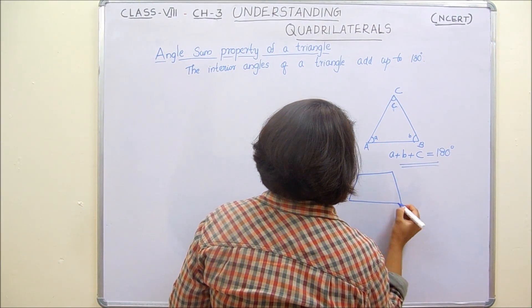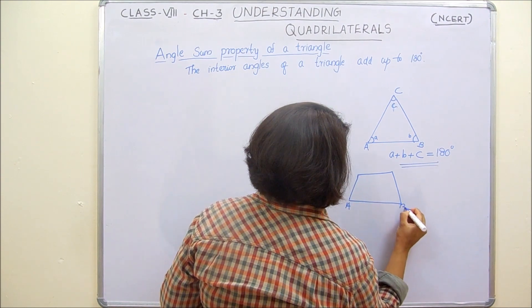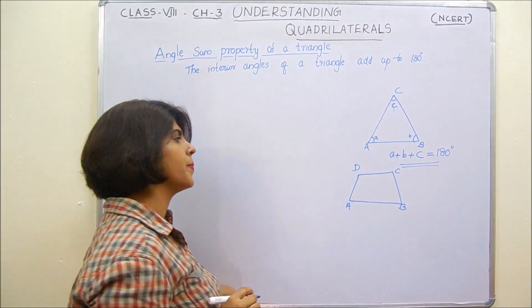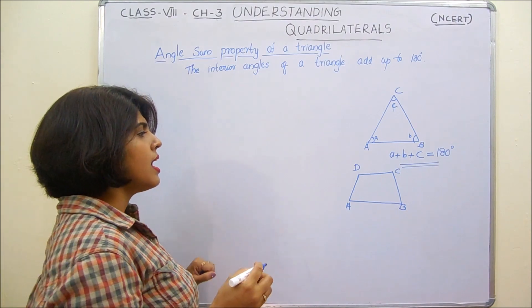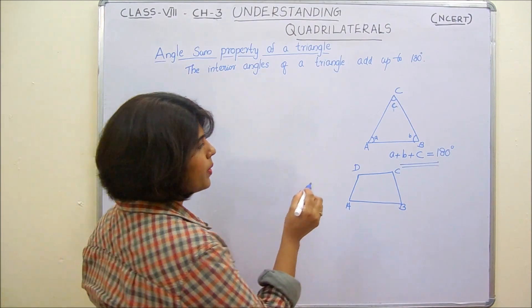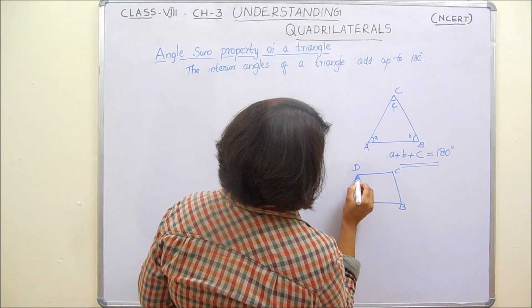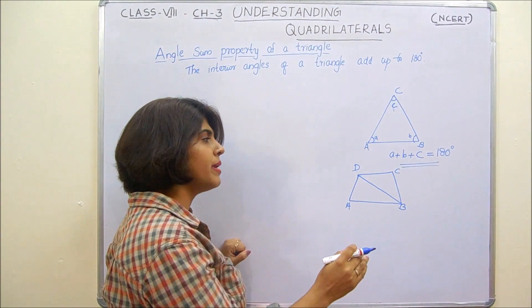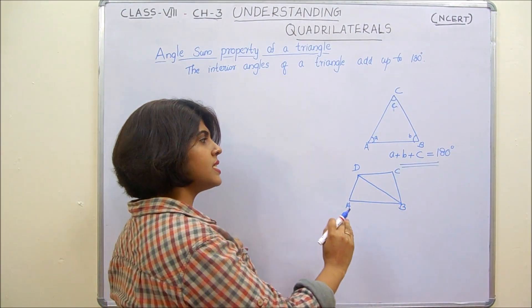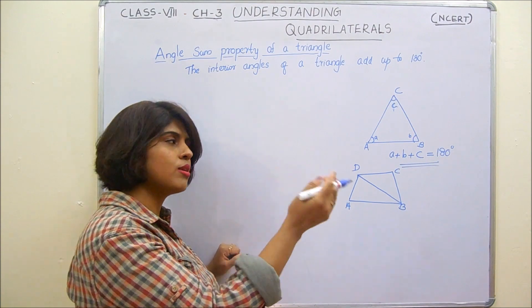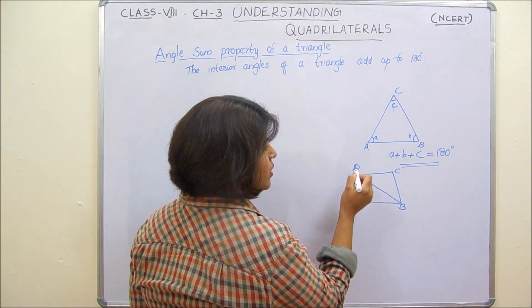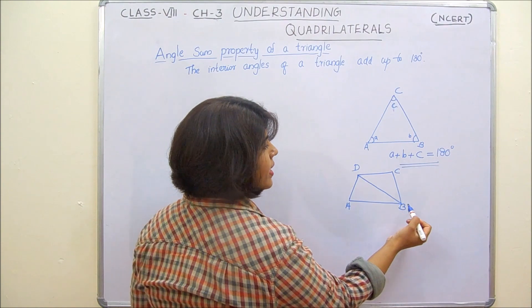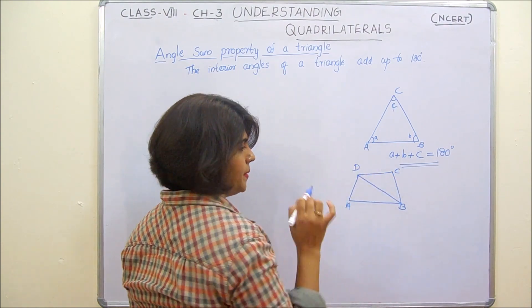First, consider quadrilateral ABCD. If we draw diagonal BD, this diagonal divides the quadrilateral into two triangles: triangle ABD and triangle BCD.